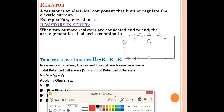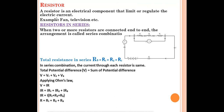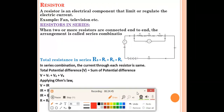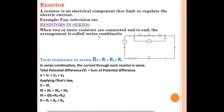A resistor is an electrical component that limits or regulates the electric current in a circuit (e.g., fan, television). There are two types of combinations: resistors in series and resistors in parallel. In a series combination, resistors R1, R2, R3 are connected end to end in a single line — when two or more resistors are connected end to end, the arrangement is called a series combination.